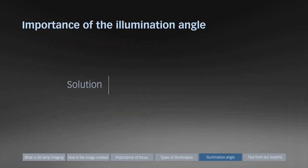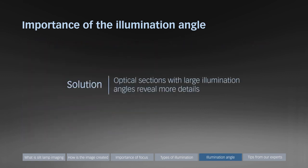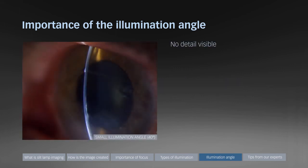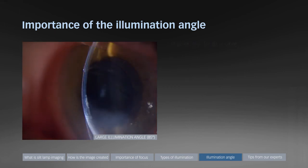The use of a large illumination angle is also beneficial in transparent media. Optical sections with large illumination angles reveal more details and can improve the depth of focus. An image captured with a relatively small illumination angle of about 40 degrees shows some pathology affecting the inferior cornea. The same eye captured with a large illumination angle of about 85 degrees reveals that the inferior cornea is thickened and that there is pathology affecting both anterior and posterior surfaces.